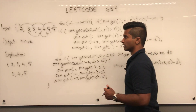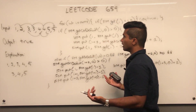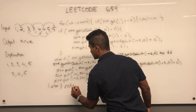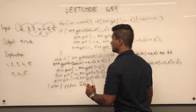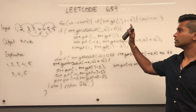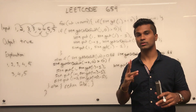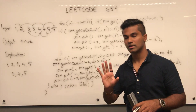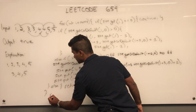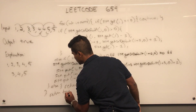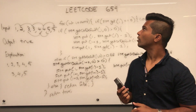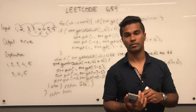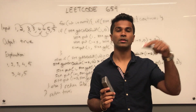If none of those conditions are satisfied for a given integer i — for example if there's a seven somewhere that can't join or create a valid sequence — we return false. After the loop, if we've processed all integers and each has either created a valid consecutive subsequence of three or more, or appended itself to an existing valid subsequence, we return true. That's how you solve LeetCode 659 — please like, subscribe, and leave questions in the comments.